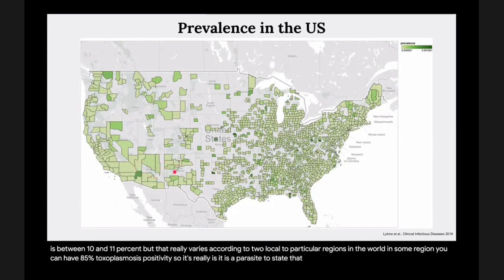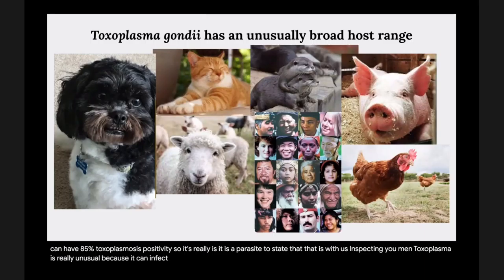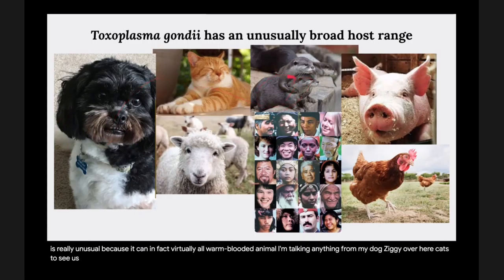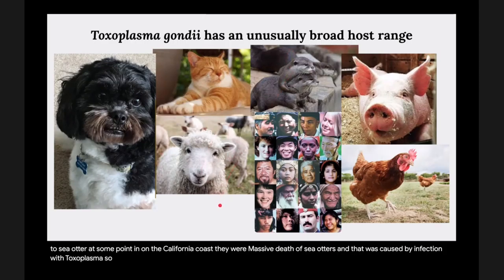In addition to infecting humans, Toxoplasma is really unusual because it can infect virtually all warm-blooded animals — from my dog Ziggy, to cats, to sea otters. At some point on the California coast there were massive deaths of sea otters caused by Toxoplasma infection. This parasite can infect lamb, pig, chicken, human — you name it.